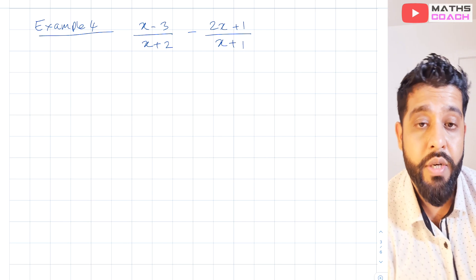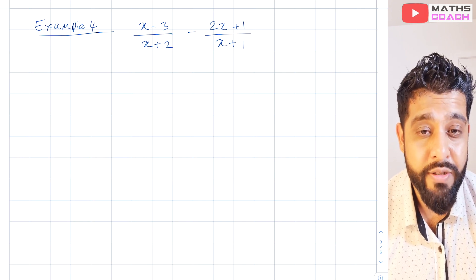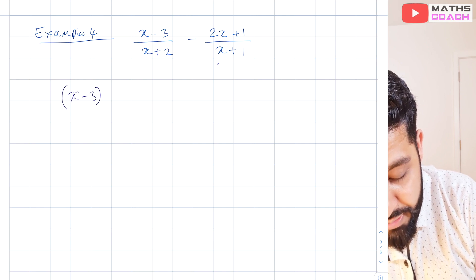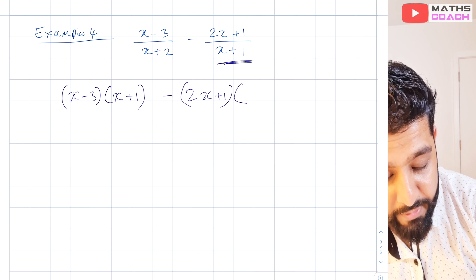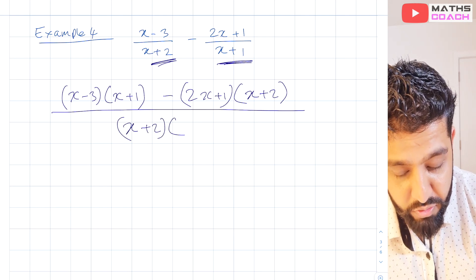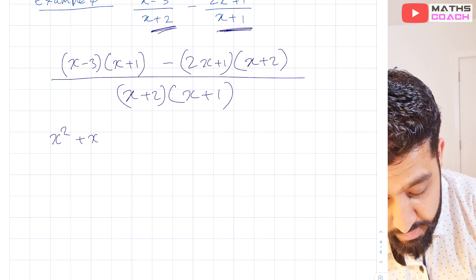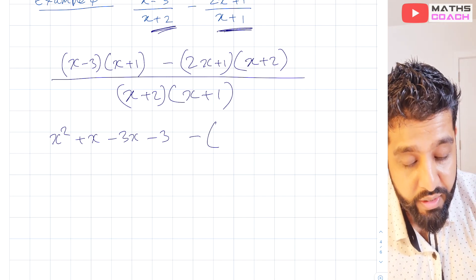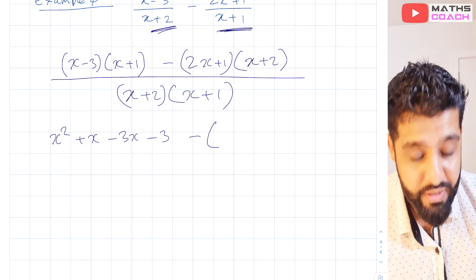Let's move on to example number 4. We have (x minus 3) over (x plus 2) minus (2x plus 1) over (x plus 1). Pause the video and try it yourself if you like. We multiply the first fraction by (x plus 1) and place the second in a bracket with a minus sign, multiplied by (x plus 2), all over (x plus 2)(x plus 1). Expanding the first bracket gives x squared plus x minus 3x minus 3.